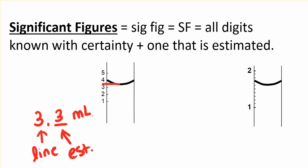So that takes us back to the definition. Significant figures are all digits known with certainty - there is a line for those - and one that is estimated between lines.